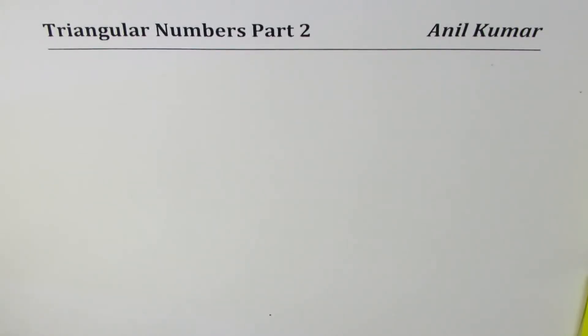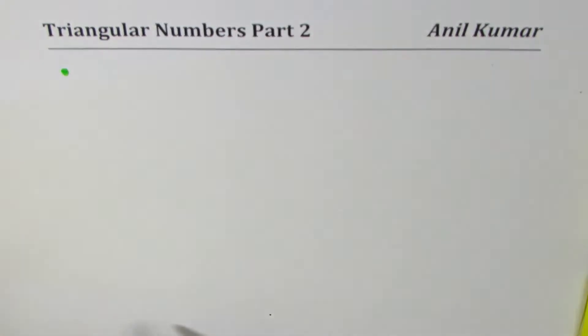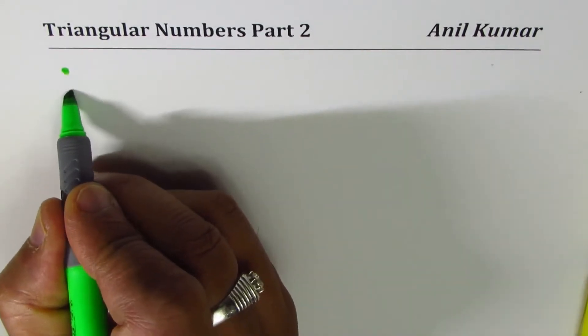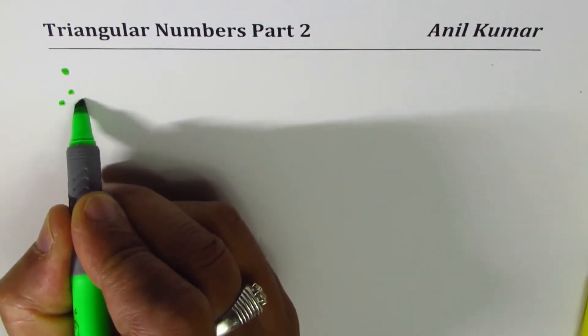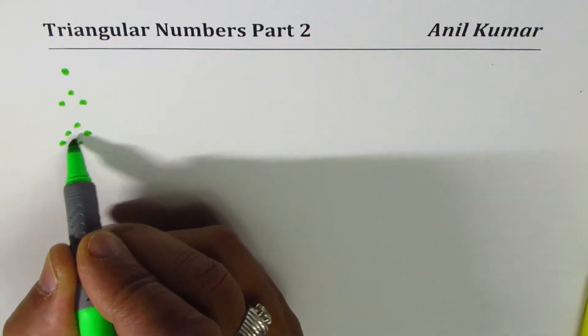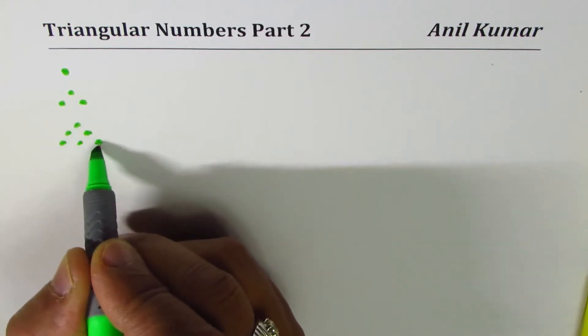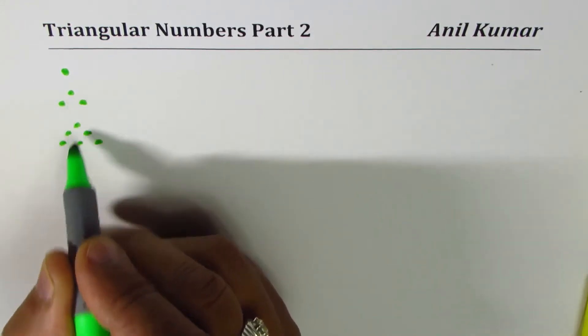So what are triangular numbers, and how do we create them? Let's begin with a dot. In this pattern, we have just one number. If I extend by creating two more under it, we see kind of a triangle with three dots. If I extend this further, creating three more, then we get a triangle with six dots.